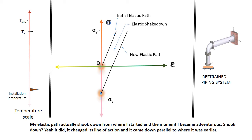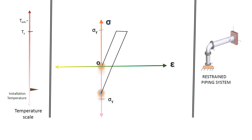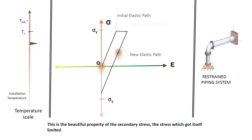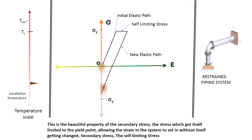So that's the elastic shakedown. This is the beautiful property of the secondary stress. The stress which got itself limited to the yield point allowing the strain in the system to set in without itself getting changed. Secondary stress, the self-limiting stress.